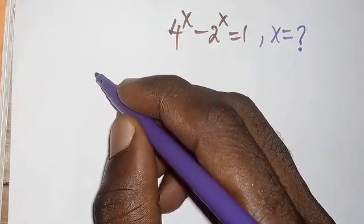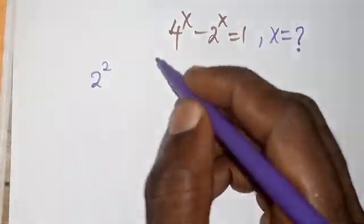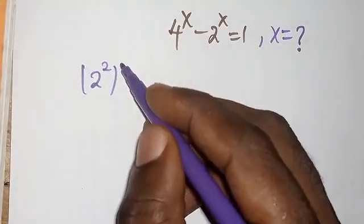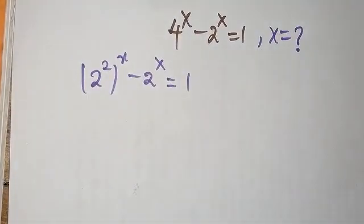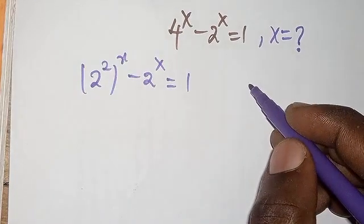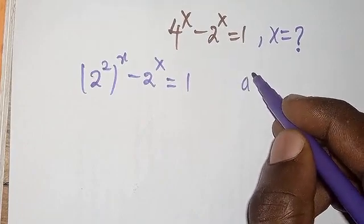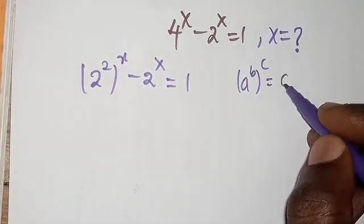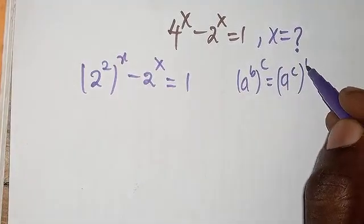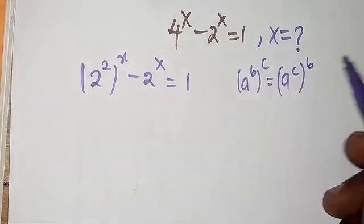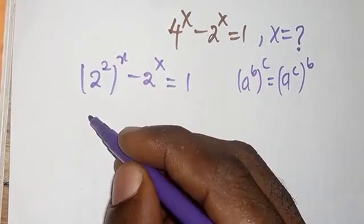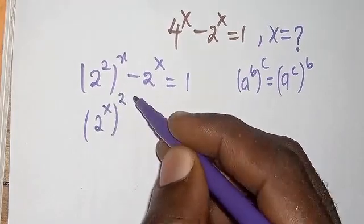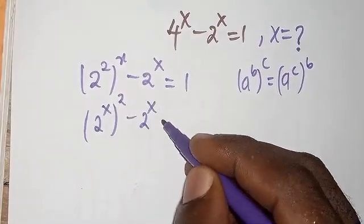Permit me to rewrite this equation — 4 can be written as 2 to the power 2, so we have 2 to the power 2, then to the power x, minus 2 to the power x equals 1. From the law of indices, whenever you have a to the power b to the power c, this can be written as a to the power c times b, so by interchanging the 2 and x, we get 2 to the power x, then to the power 2, minus 2 to the power x equals 1.